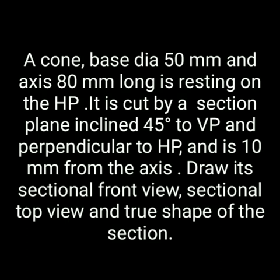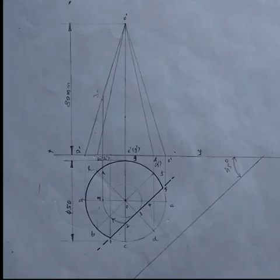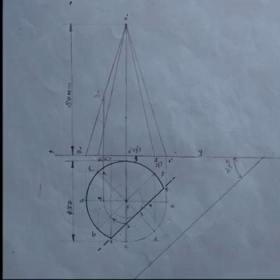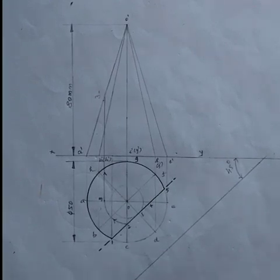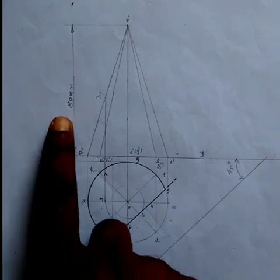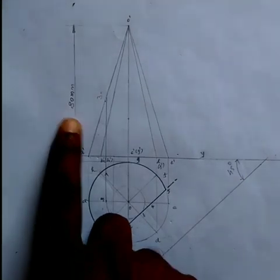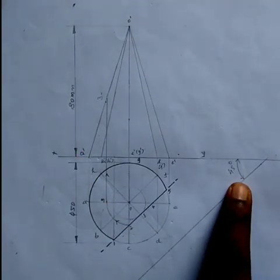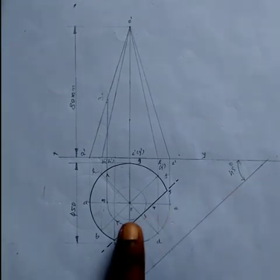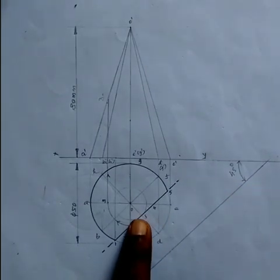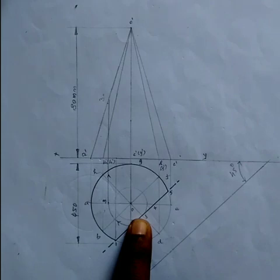Let's review the same question. The diameter is 50mm and the height of the prism is 80mm. The cutting plane is inclined at 45 degrees to VP. The distance from the axis is 1cm (10mm).